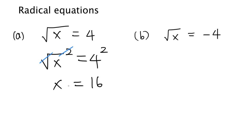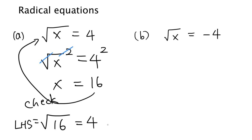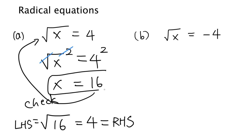So we've got the solution. Let's check the solution. If you put this number back into the original equation, we have square root of 16 on the left-hand side. Square root of 16 is nothing but 4, and 4 is the right-hand side. So the left-hand side equals the right-hand side — this is the correct solution.